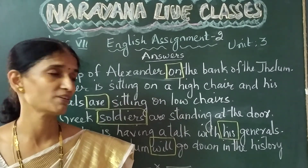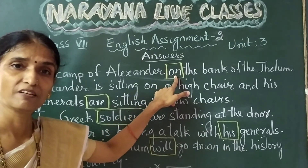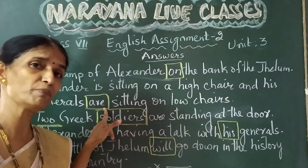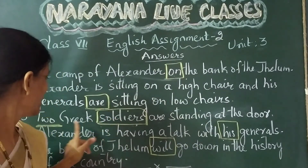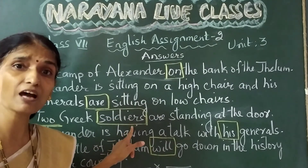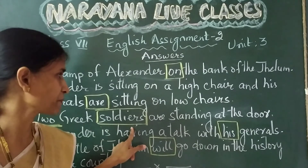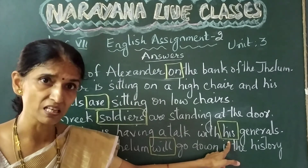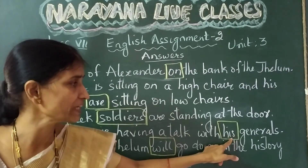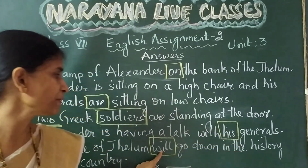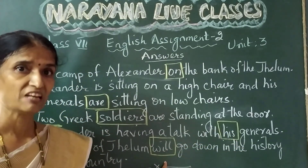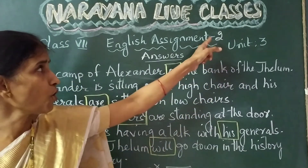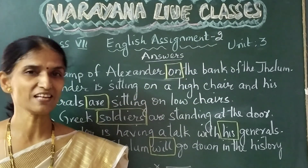So the five corrections that we made: First, at the preposition — we changed 'in' to 'on.' Second, we changed the tense of the be-form — we replaced 'were' with 'are.' Third, we replaced the singular noun with the plural noun 'soldiers.' Fourth, we corrected the inappropriate pronoun reference — because Alexander is a man, we replaced 'her' with 'his.' And the last change was with the verb — we changed 'would go' to 'will go.' That was the editing exercise of Assignment 2. Thank you children, have a good day.